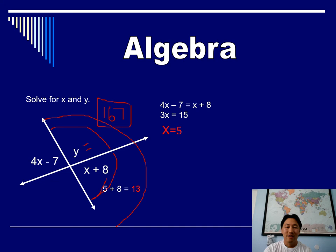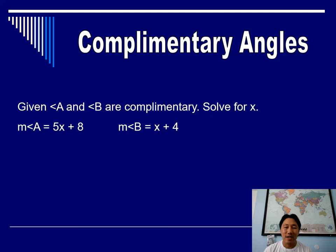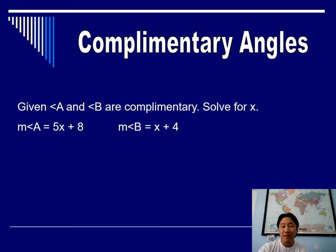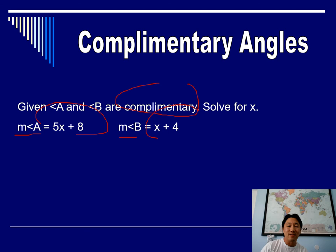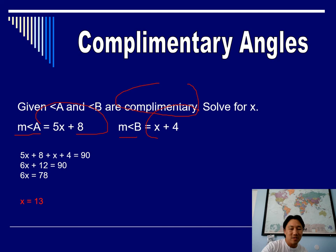Let's do an example with complementary angles. No picture is given — you just have to know what complementary means: angles that add up to 90. So we set up the equation: (5x + 8) + (x + 4) = 90. Combine like terms to get 6x + 12 = 90, subtract 12 from both sides, divide by 6, and you get x equals 13.